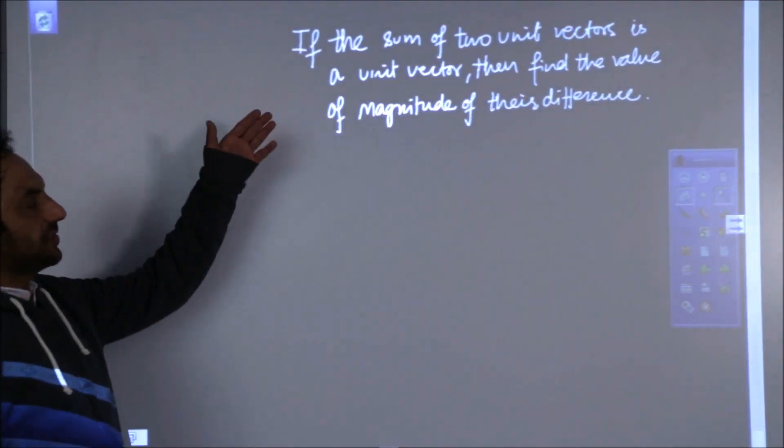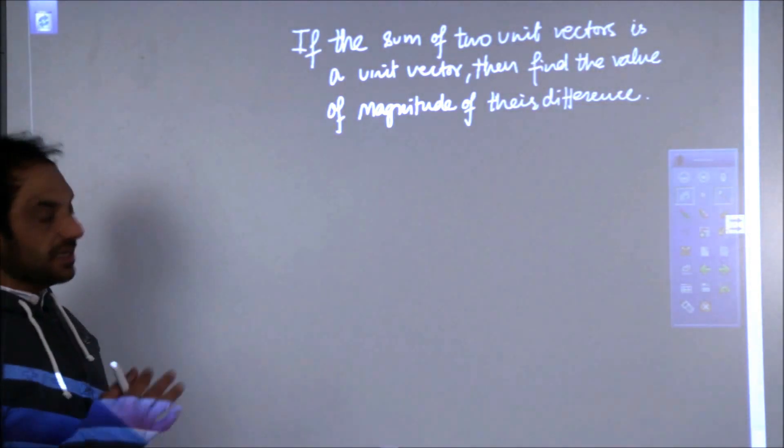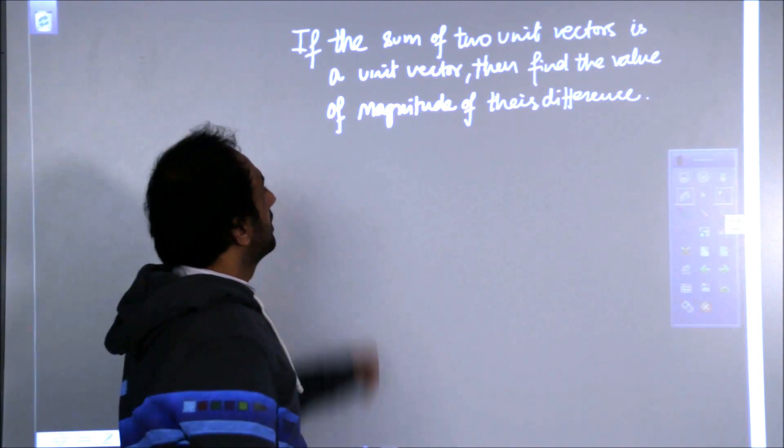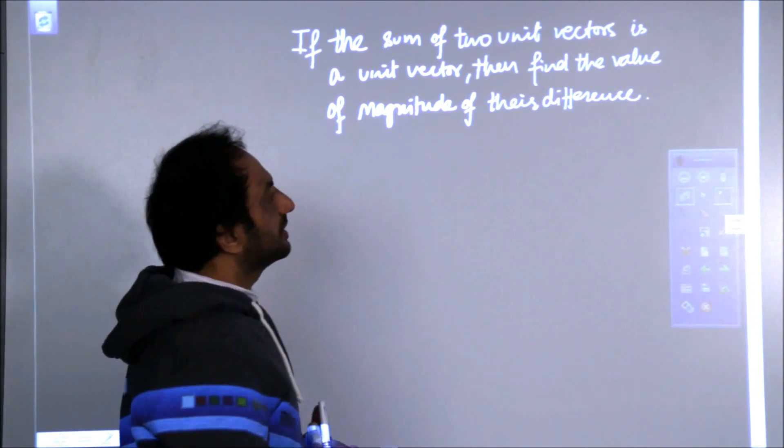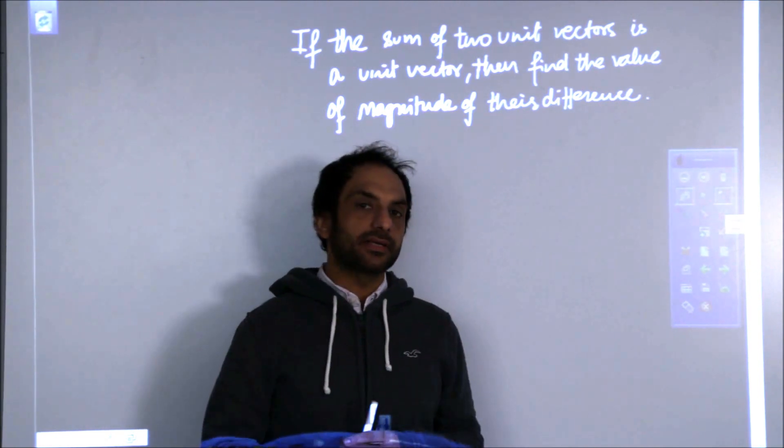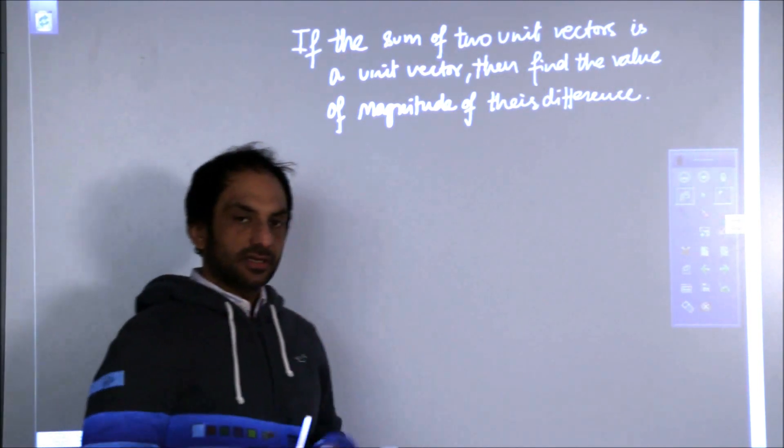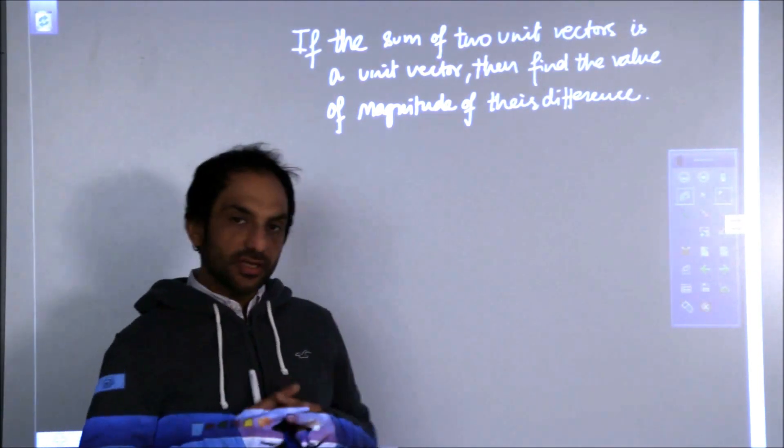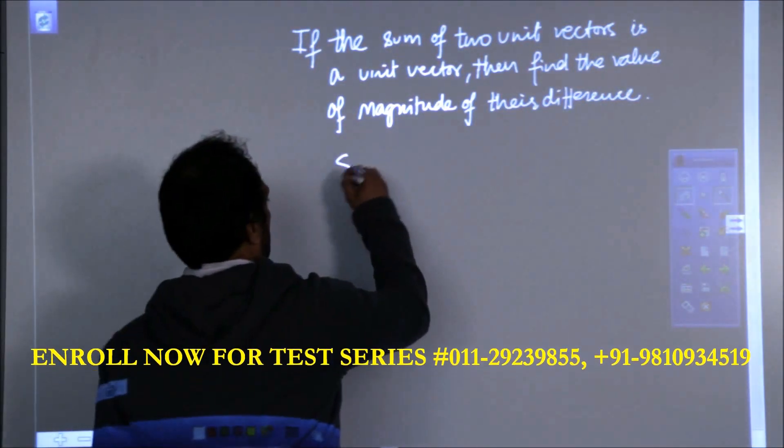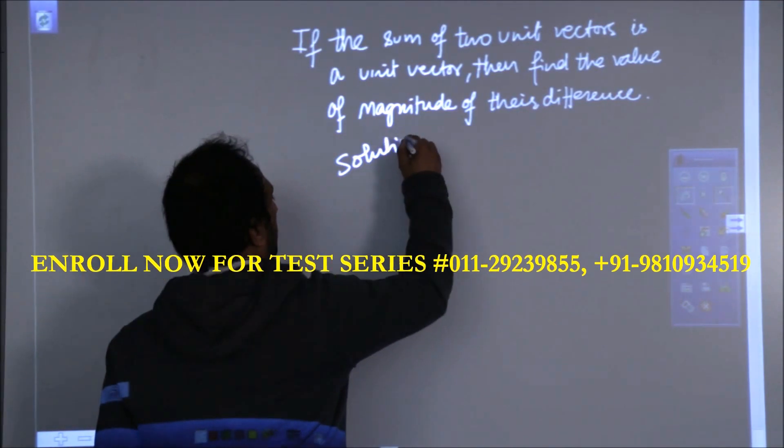If the sum of two unit vectors is a unit vector, then find the magnitude of their difference. Then find the value of the magnitude of their difference. If the sum of two unit vectors is a unit vector.